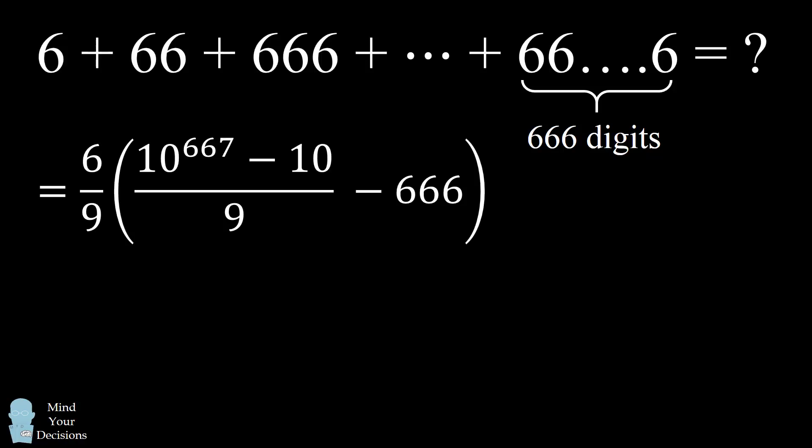But what is this as a number? We could write it out in decimal form in the following fashion. It's a 666 digit number which has the string 740 repeated over and over again until the very last three digits, which are 296. So the string 740 is repeated and consists of 663 of the digits of the 666 digit number.